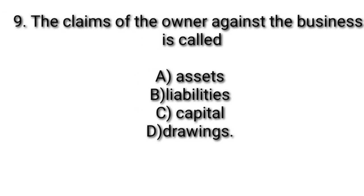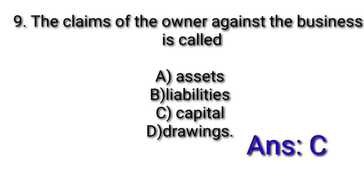The claims of the owner against the business is called — Assets, Liabilities, Capital, Drawings. Answer option C: Capital. The claims of the owner against the business is called Capital.